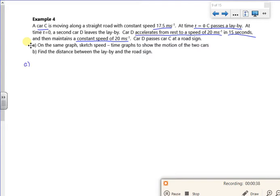So car A, let's draw a graph. So this is your speed in meters per second, and this is your time in seconds. So car A, doing red, has got a constant 17.5.